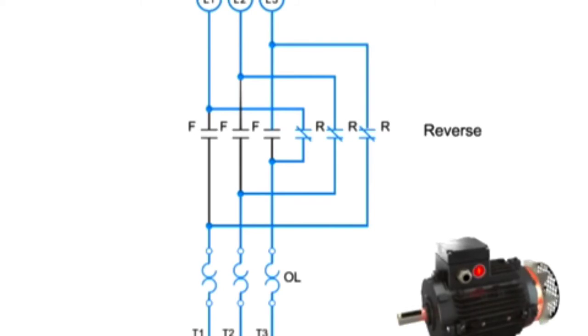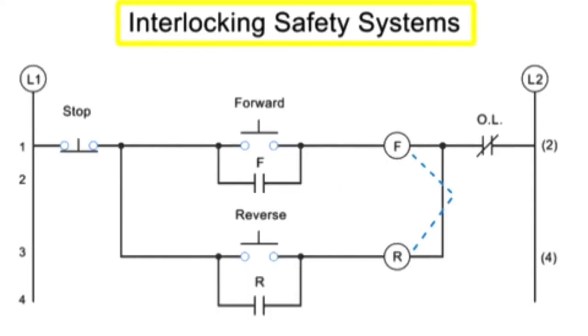In order to protect against this kind of short circuit, manufacturers employ three types of interlocking safety systems. Interlocks create a web of safety checks within a circuit to prevent both forward and reverse coils from being energized at the same time. They are represented in circuitry diagrams by a dotted line.